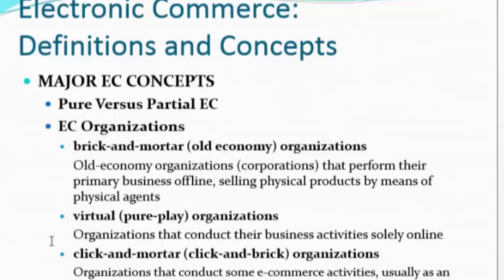Big corporations that perform their primary business offline — they sell physical products by means of physical agents. You have physical sellers there who you can bargain with, bid a price with, and if it's a fixed price depending on store policies you follow them. That is what a brick and mortar organization is called.